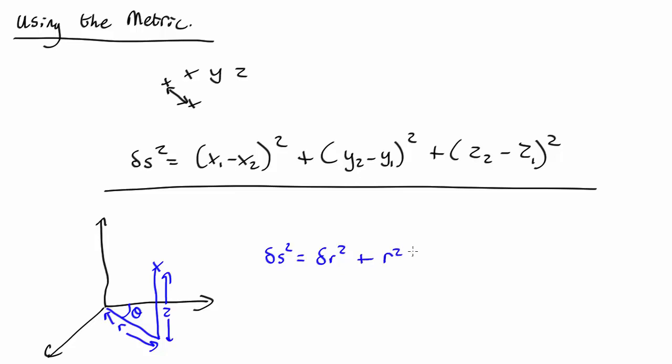Plus r squared dθ squared plus dz squared. So this is a tricky one. You have to get the distance along here, you have to multiply by the r. So what can you do here? Well, this will just equal r2 minus r1, so r of the second point minus the r of the first point squared.